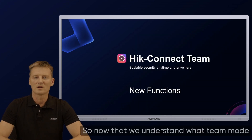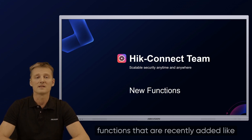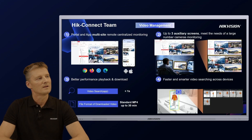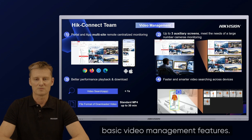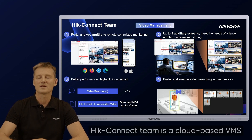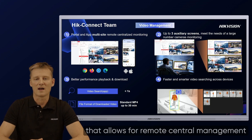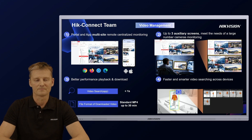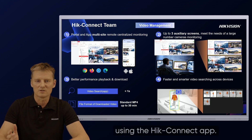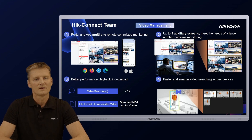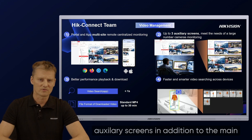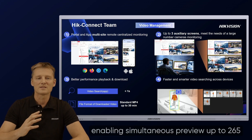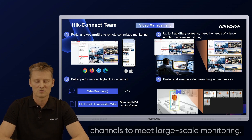Now that we understand what team mode is, I'd like to highlight some new functions recently added: AccuSearch in video management, access control and ANPR. HiConnect team is a cloud-based VMS management software with a cloud portal that allows for remote central management anytime, anywhere using Chrome, Firefox, Safari or Edge browsers. Remote central management can also be conducted using the HiConnect app. HiConnect team supports up to 3 auxiliary screens in addition to the main screen — a total of 4 screens — enabling simultaneous previews of up to 265 channels to meet large-scale monitoring needs.